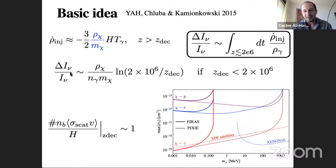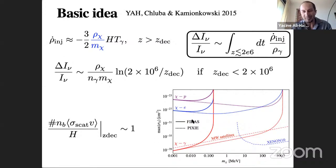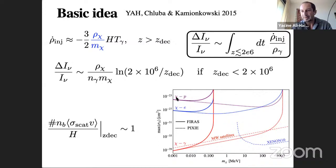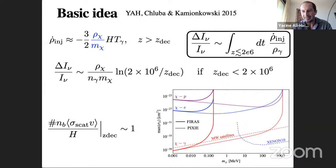By solving for the decoupling redshift in terms of the cross-section, you can find the spectral distortion as a function of cross-section and turn this around: given FIRAS upper limits or forecasted future experiment sensitivities, you can set upper limits on the dark matter elastic scattering cross-section with protons, electrons, or photons as a function of dark matter mass.